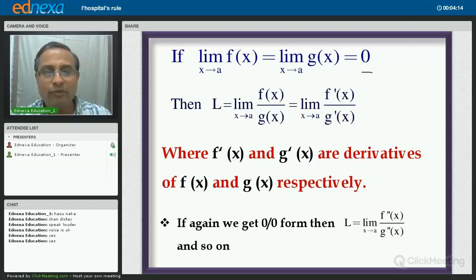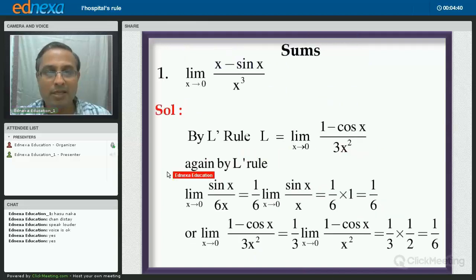Now it might happen that again we get 0 by 0 form. So in that case, if again we get 0 by 0 form, then what is the value of limit L? It is nothing but limit of f''(x) upon g''(x) as x tends to a and so on. You may get 0 by 0 form after this step. So what should be done? Again, find derivative of numerator and denominator separately.